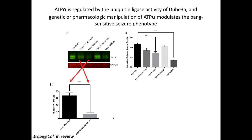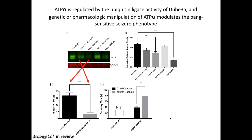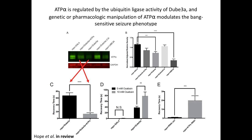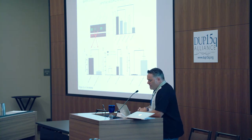There could be other substrates — I'm not claiming ATP-alpha is the only one, but it's a very strong one for the seizure phenotype. We can actually make flies have worse seizures by adding 10 millimolar Ouabain, an ATP-alpha inhibitor. Flies expressing UBE3A that are also treated with Ouabain take much longer to recover, meaning whatever little ATP-alpha remains is functionally important. And when we overexpress an RNAi for ATP-alpha, flies have seizures — all consistent with UBE3A regulating ATP-alpha as a key player in the seizure phenotype.